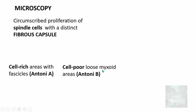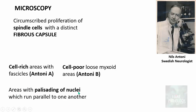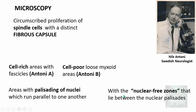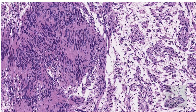Schwannomas have two areas: a cell-rich area with fascicles called Antoni A area, and a cell-poor loose myxoid area called Antoni B area — named after Swedish neurologist Nils Antoni. The Antoni A area contains palisading of nuclei running parallel to one another, with nuclear-free zones between them. The combination of a nuclear-free zone flanked by palisading nuclei is referred to as a Verocay body, named after José Verocay, a Uruguayan pathologist.